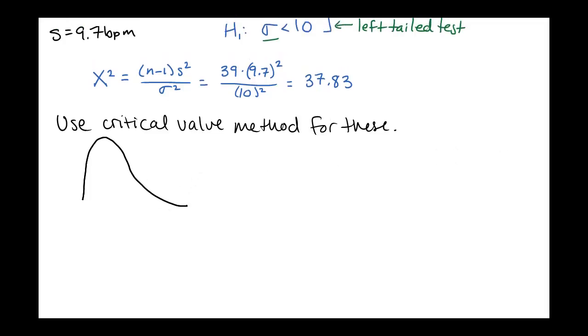Now because this was a left-tailed test, I'm expecting to look at the left tail here. And again, it doesn't really matter how you draw this. This is just for a visual. So here our critical region is supposed to have area corresponding to our alpha value.